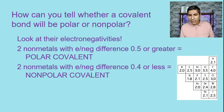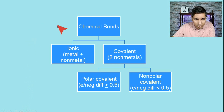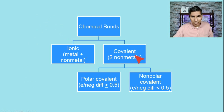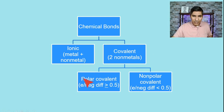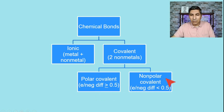Let's review what we've covered. Chemical bonds can be divided into ionic or covalent. Ionic bonds are generally composed of a metal and a nonmetal. Covalent bonds are composed of two nonmetals. If it's a covalent bond, we go one step further: a polar covalent bond has two nonmetals with an electronegativity difference greater than or equal to 0.5, while a nonpolar covalent bond has two nonmetals with an electronegativity difference less than 0.5.